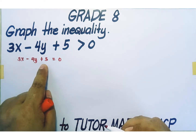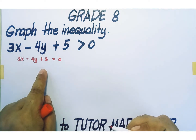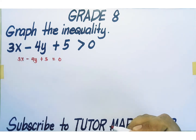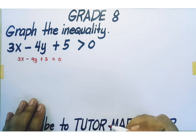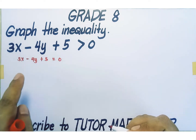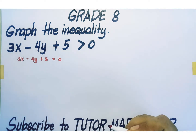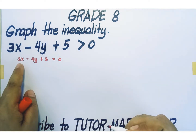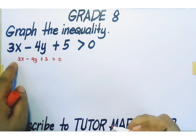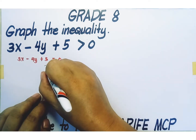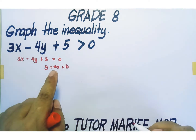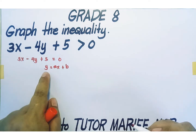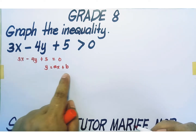To graph a linear equation, we can use any of the three common methods: finding two points, using the y-intercept and slope, and using the x and y-intercepts. I am going to convert this linear equation into y equals mx plus b form, or the slope-intercept form.